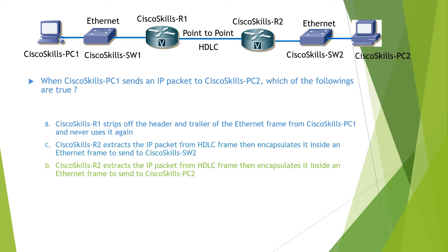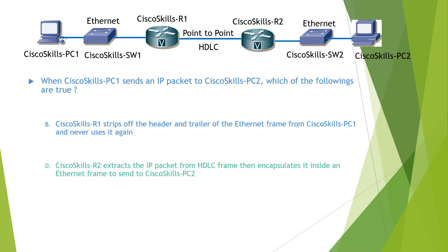R2 extracts the IP packet from the HDLC frame, then encapsulates it inside an Ethernet frame and sends it to Switch 2. This answer is not correct because it is not sending to Switch 2 — it is sending to PC2. R2 extracts the IP packet from the HDLC frame, then encapsulates it inside an Ethernet frame to send to PC2. So this answer is correct. The final answers are B and D. You can find the detailed explanation in the video. Network layer routing logic.